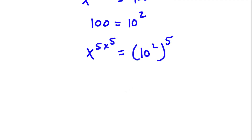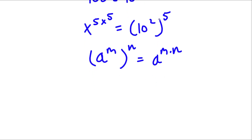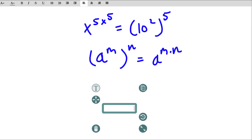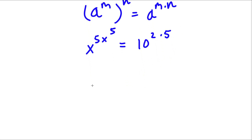Now, remember how if we have something in the form a to the power of m to the power of n, this is equal to a to the power of m times n. So 10 to the power of 2 to the power of 5 is equal to 10 to the power of 2 times 5. And 2 times 5 is 10. So I have x to the power of 5x to the power of 5 is equal to 10 to the power of 10.